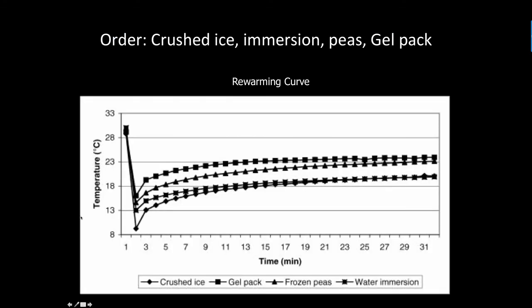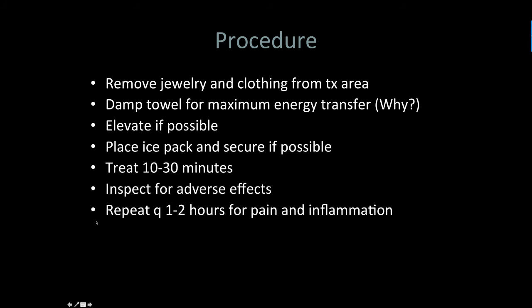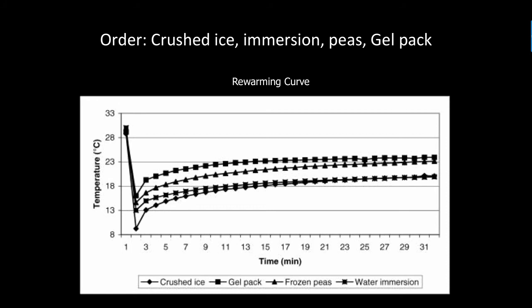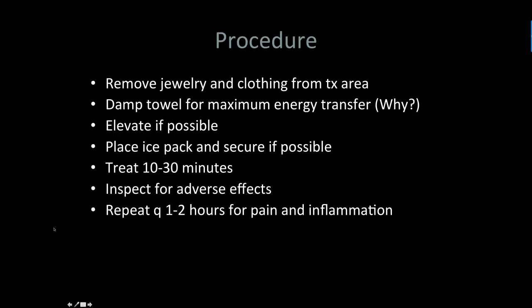From that same article, here's a rewarming curve. We can see that the crushed ice is down at the bottom — because we had more of a temperature decrease, it's going to be slower to warm up, so we get a longer-lasting effect. The gel pack is the one on top. It seems a little counterintuitive that the gel pack is colder but gives less of the physiological effect we want. What's being proposed is that we have the phase change that occurs as water goes from solid to liquid, so it's able to extract more heat — that's just the nice property of the specific heat of water.